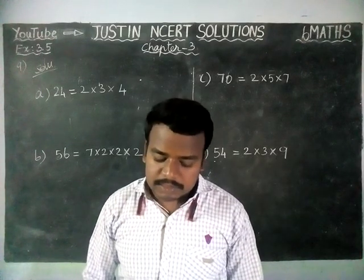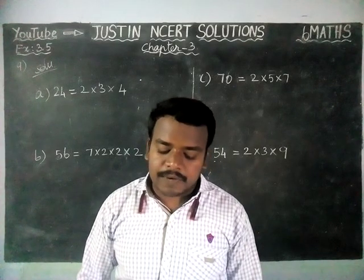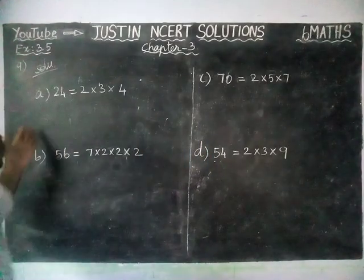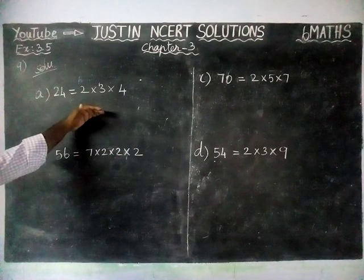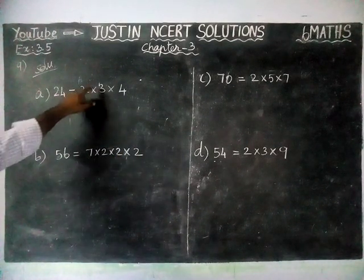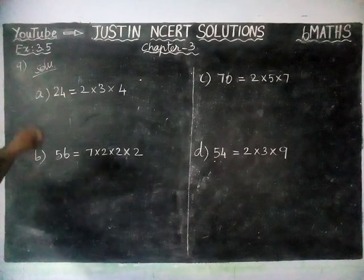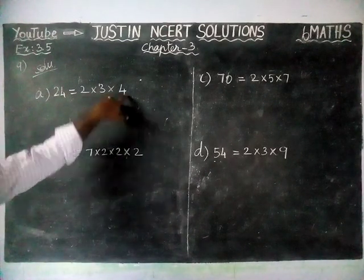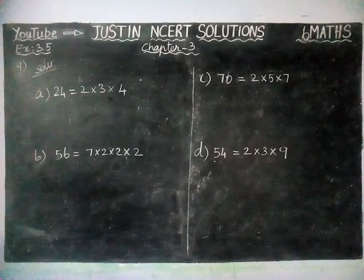The question is: in which of the following expressions has prime factorization been done? They have given totally 4 options. The meaning of prime factorization is that the factors should be prime numbers. We have to check all 4, one by one.